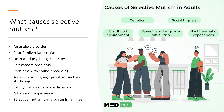There is no single known cause of selective mutism. Researchers are still learning about factors that can lead to it, such as an anxiety disorder, poor family relationships, untreated psychological issues, self-esteem problems, problems with sound processing, a speech or language problem such as stuttering, family history of anxiety disorders, a traumatic experience. Selective mutism can also run in families.